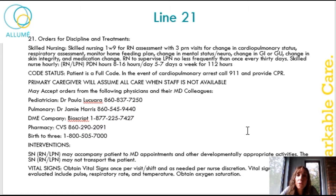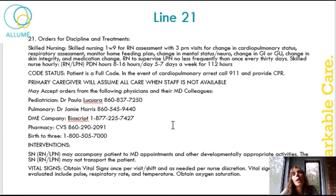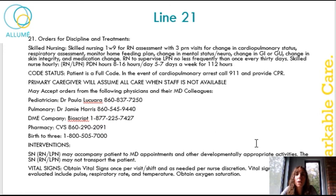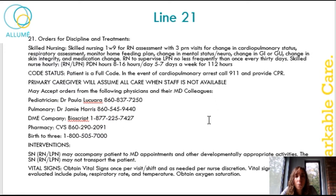Line 21 goes into the orders and disciplines for treatments. This is where you will find the order for the skilled nursing. For instance, one week nine for RN assessment with three PRN visits for change of status. The case manager will come out and see your patient once a week and do an assessment along with a supervisory visit. Underneath that you'll see the code status of the patient, and that the primary caregiver will assume care when staff is not available — very important to list. Then it goes on to talk about which doctors we can take orders from, and vital signs and so on.